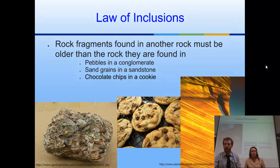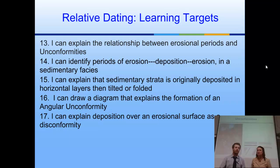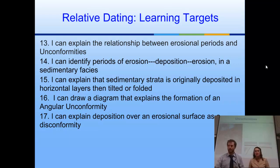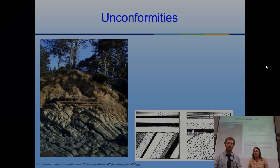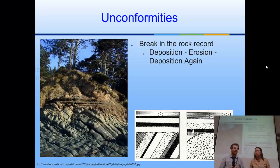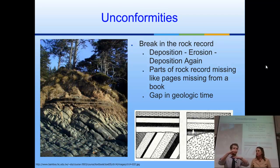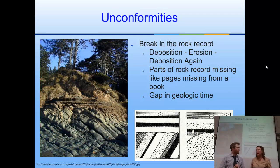Now we've got some more learning targets — pause on these because we're talking about something similar but a bit different. We're going to talk about how we take those laws and apply them to unraveling the history of a sequence of rocks or an outcrop, so you'll be able to understand what happened, why it happened, and in what order. That brings us to something called an unconformity — it's just a break in the rock record, like pages missing from a book.